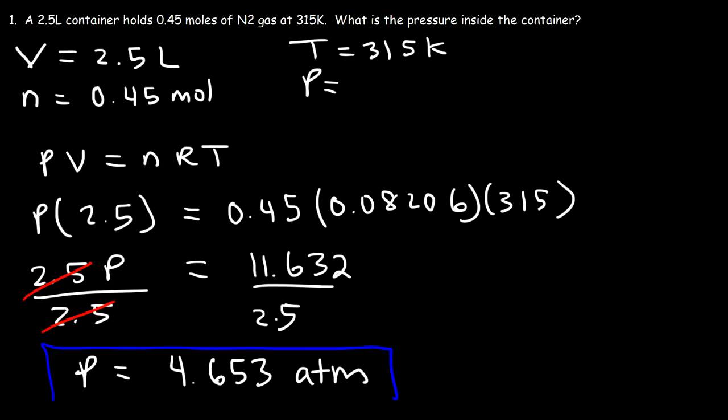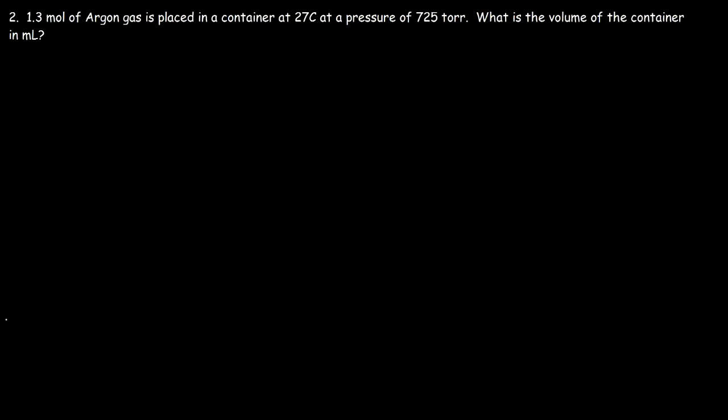Let's move on to number two. 1.3 moles of argon gas is placed in a container at 27 degrees Celsius at a pressure of 725 torr. What is the volume of the container in milliliters?